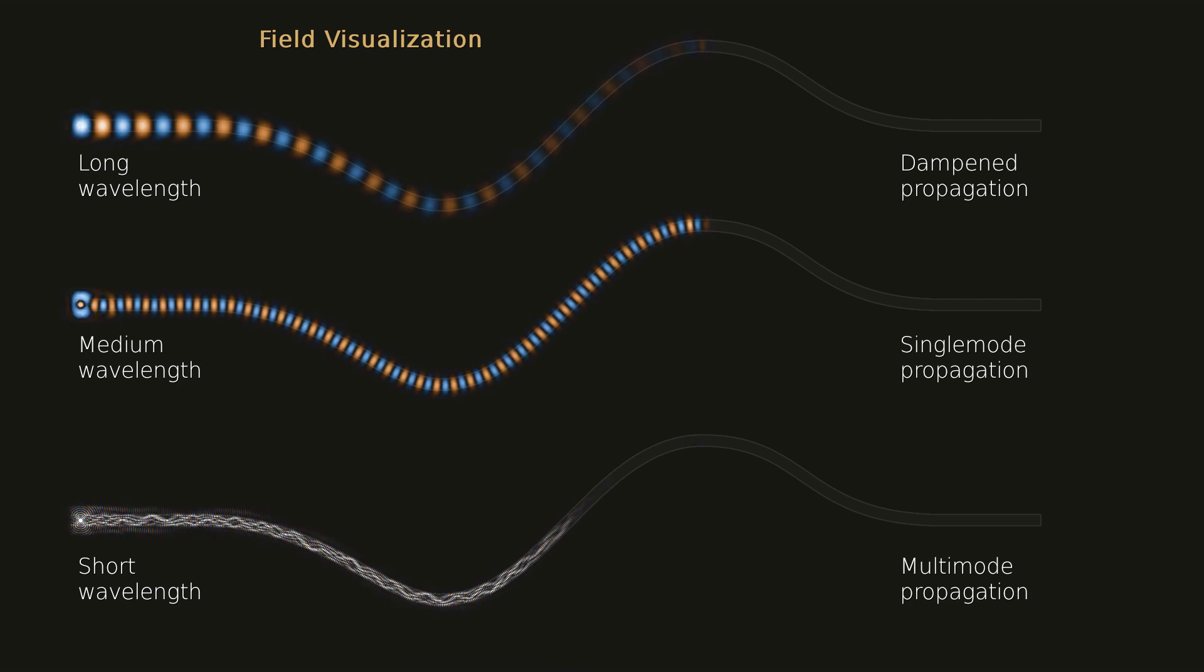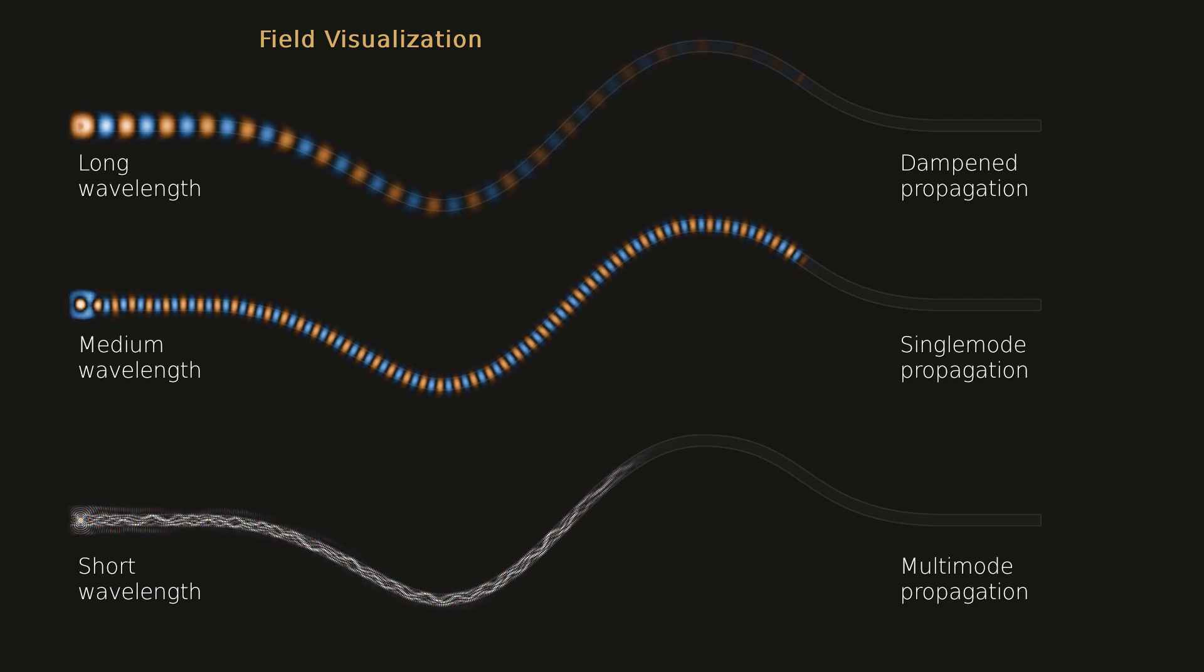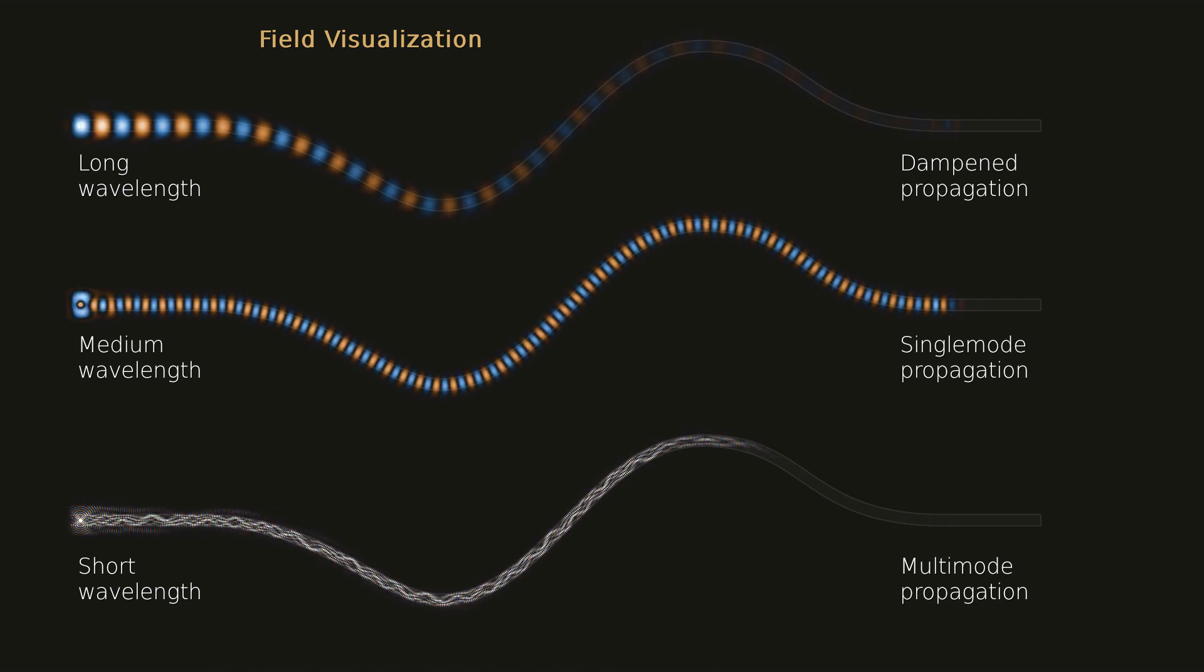Almost no light reaches the end of the fiber. In the middle, the fiber operates in single mode regime with low loss and a very ordered propagation pattern.